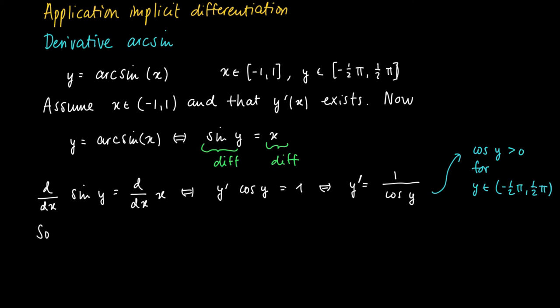Now we may use the identity that cosine squared plus sine squared equals 1, so that we may write the cosine of y in a different way. This is the square root of 1 minus the sine squared. Here we use the fact that the cosine of y is positive, strictly positive.